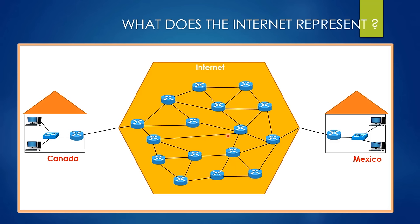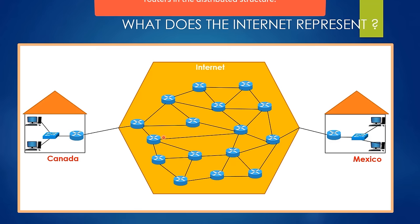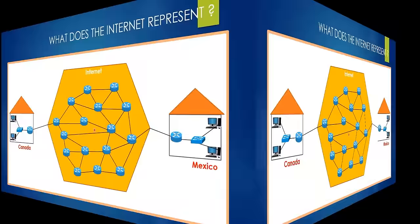In the distributed structure, while we only connect two routers with one cable, in the single-router structure we would connect millions of LANs to the giant router — needing a lot of very long cables to a single point, creating a huge mass. By using this distributed structure, we minimize the cable mass and avoid overloading of a router.